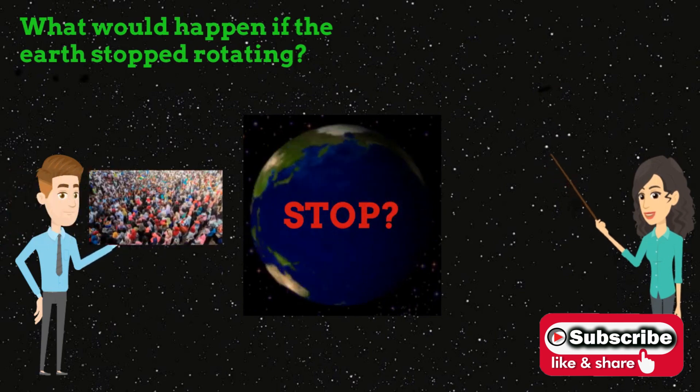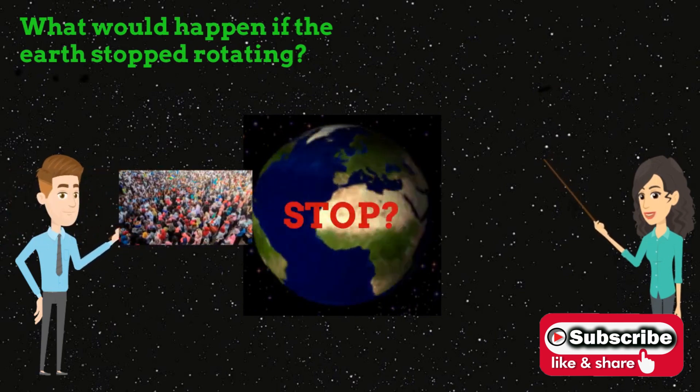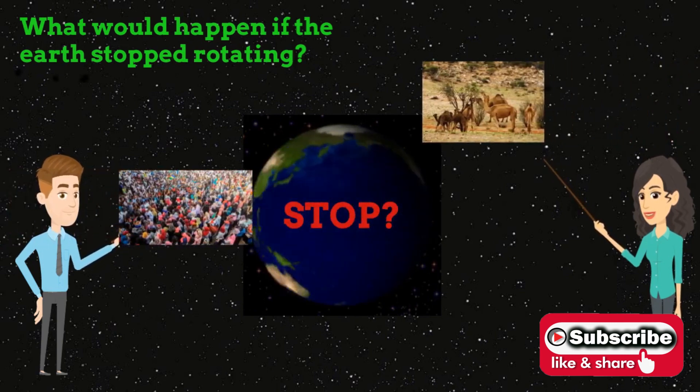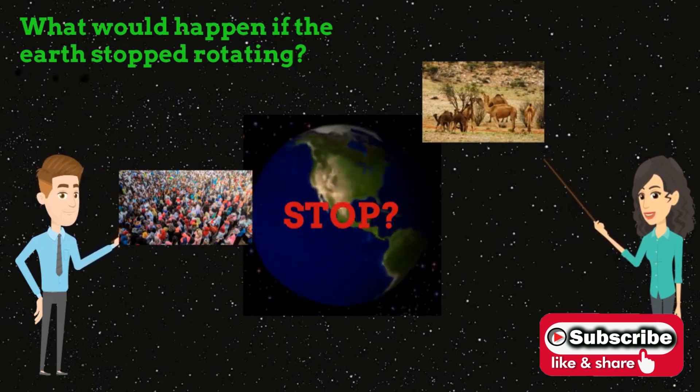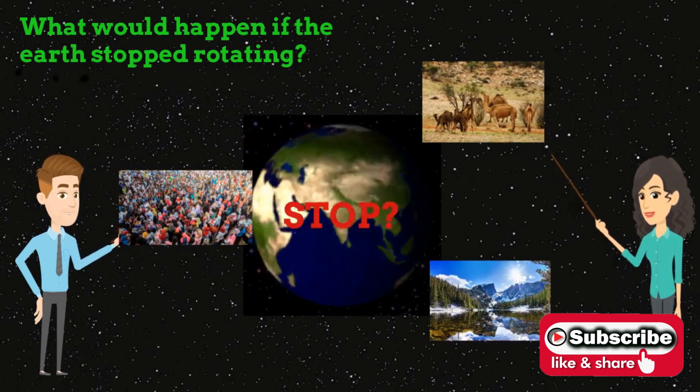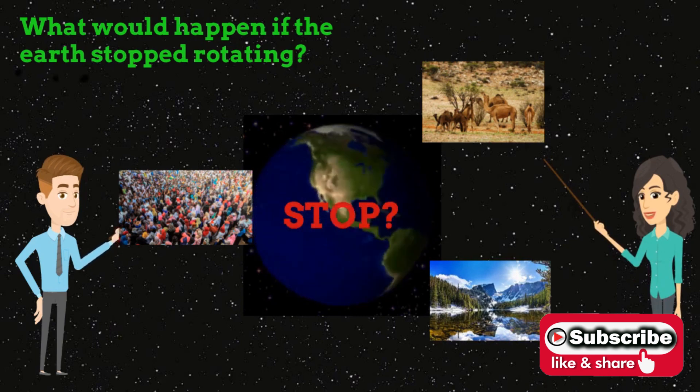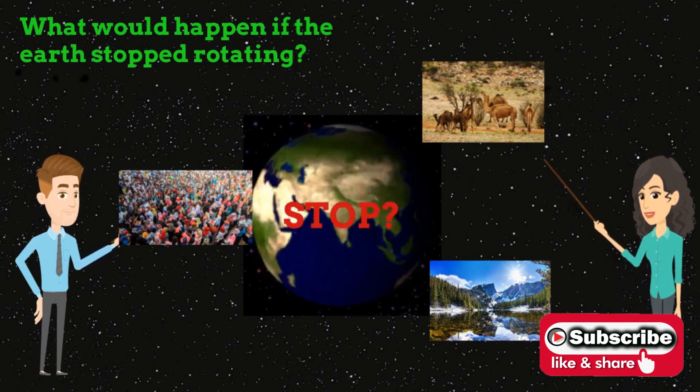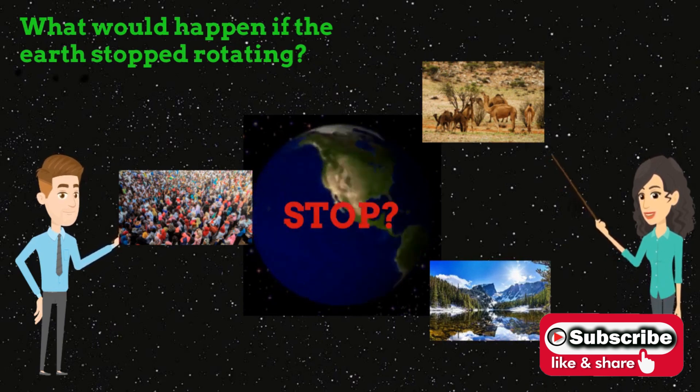Earth is the only planet in the solar system known to harbor life. Our planet's rapid spin and molten nickel-iron core give rise to an extensive magnetic field, which, along with the atmosphere, shields us from nearly all of the harmful radiation coming from the Sun and other stars.